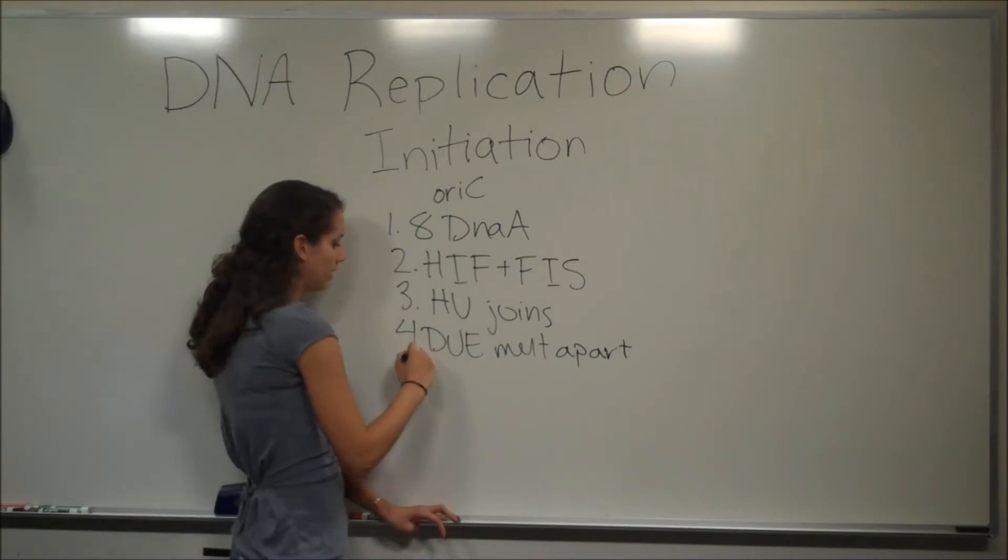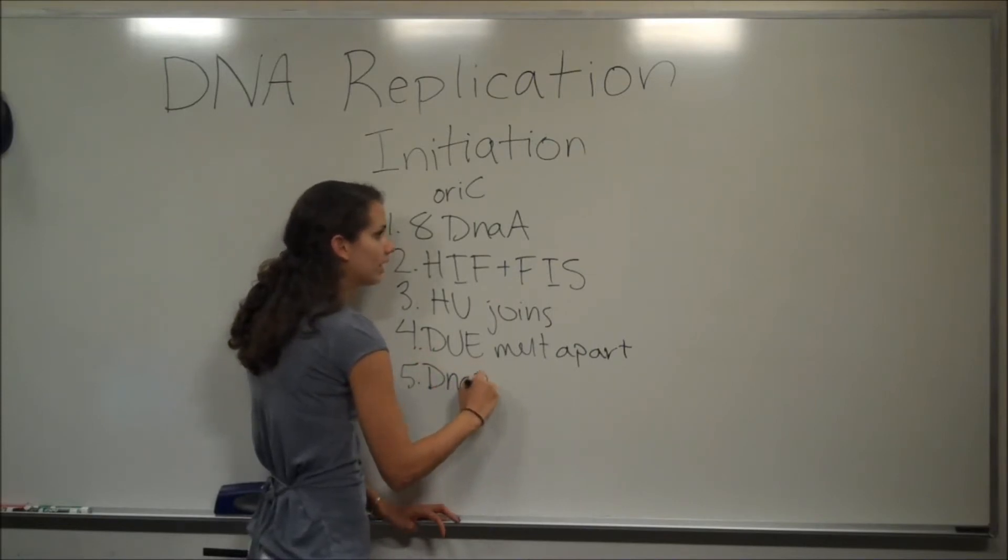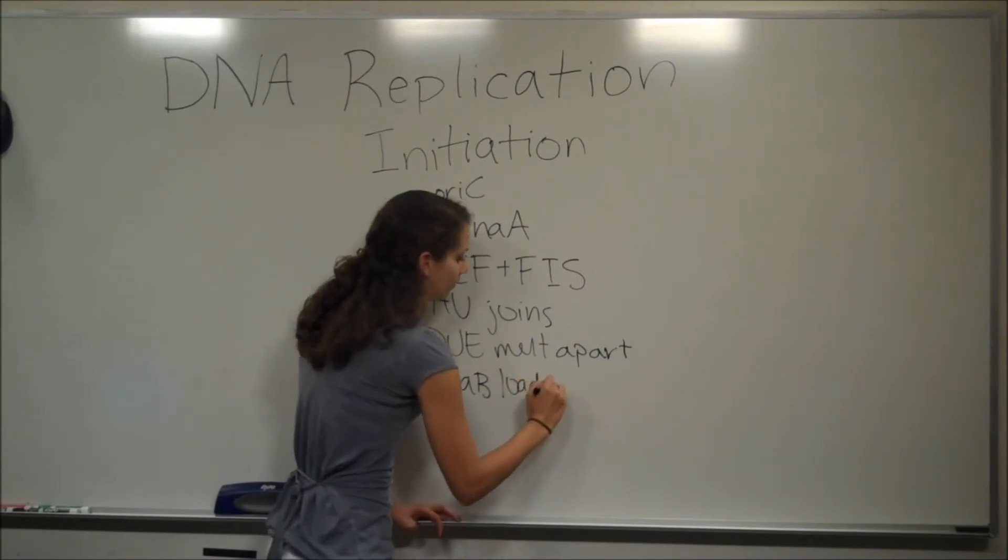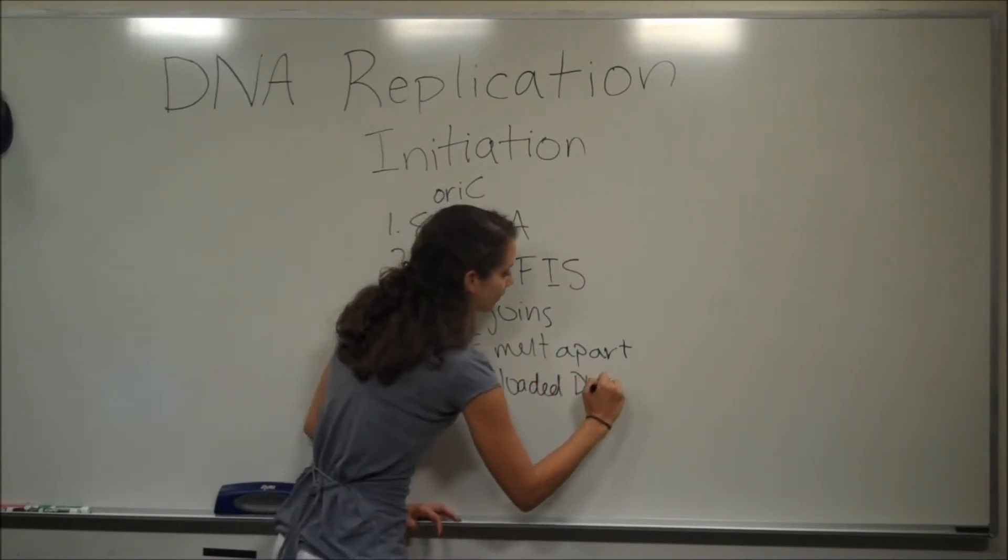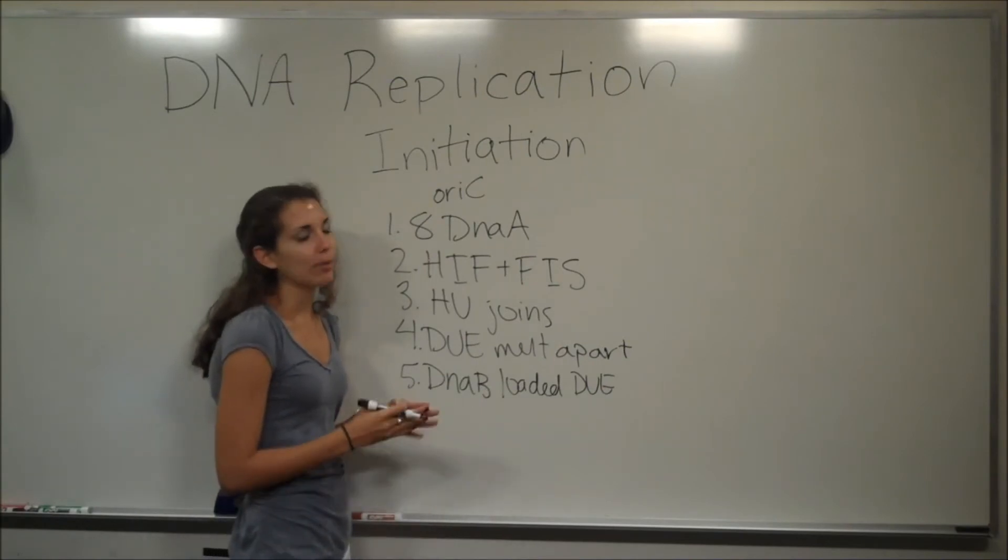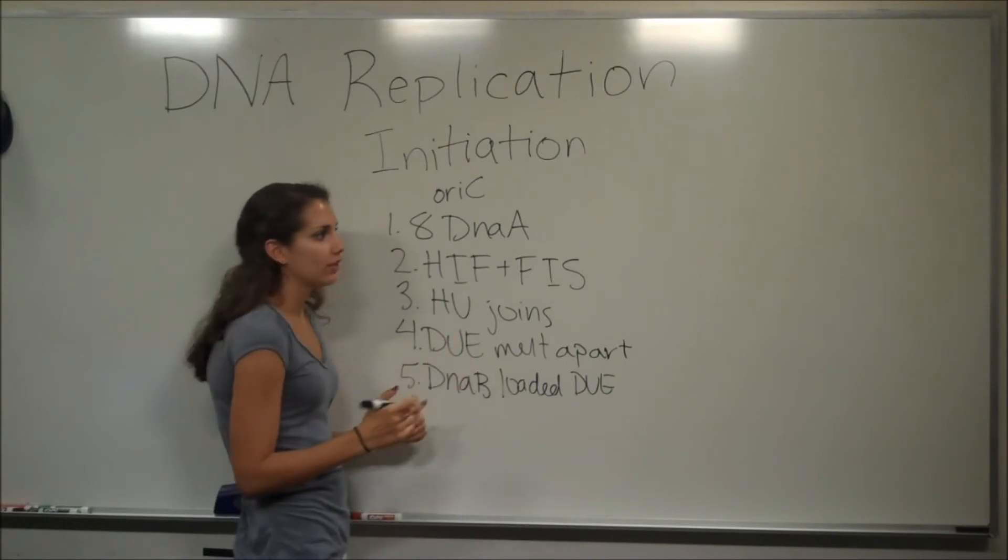So next, DnaB is going to be loaded as a hexamer onto the DUE, now melted apart. And it's going to be bound to a single-stranded DNA molecule. So at this point the chromosome is double-stranded. The two strands have separated, melted apart, and it's going to load to the single strands.